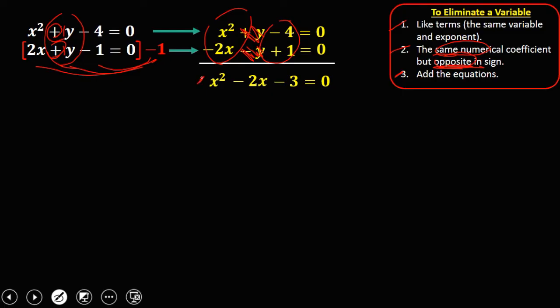So since we have this quadratic equation, we can solve this one by factoring. So factors of x squared, that's x times x, factors of negative 3, that's 3 and 1. Now since the middle term is negative 2x, therefore this 3 is negative and 1 is positive.